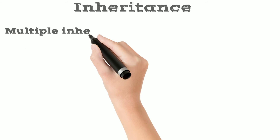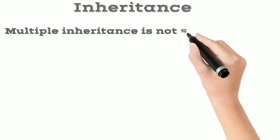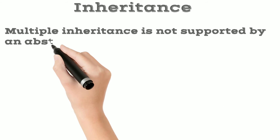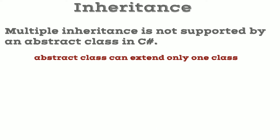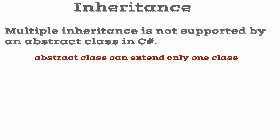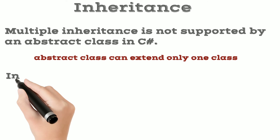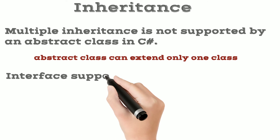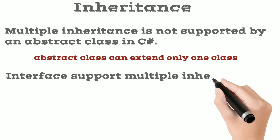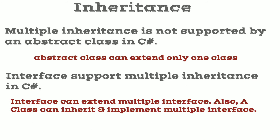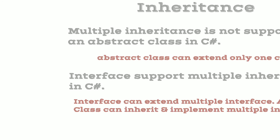Multiple inheritance is not supported by an abstract class in C#, which means that a class can only inherit one class at a time. But interface supports multiple inheritance, which means an interface can extend multiple interfaces. Also, a class can inherit and implement multiple interfaces at a time.